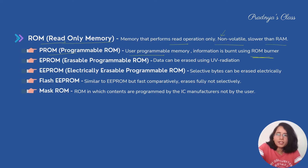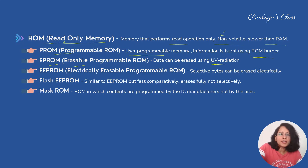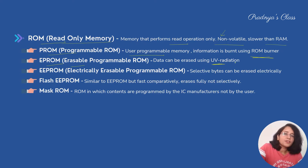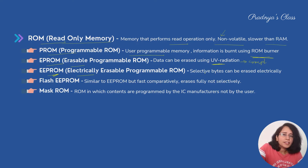There is one more variation of PROM called EPROM — Erasable PROM. Here we can erase the data using UV radiation; when erased, the data gets erased completely. So we have a variation of EPROM called EEPROM — Electrically Erasable Programmable ROM — where selective bytes can be erased electrically.